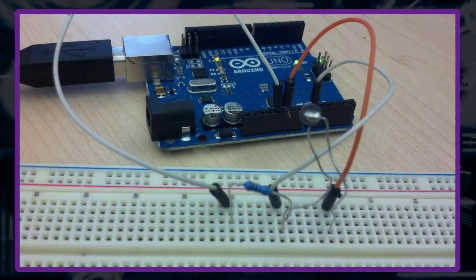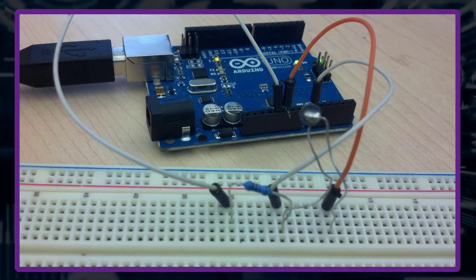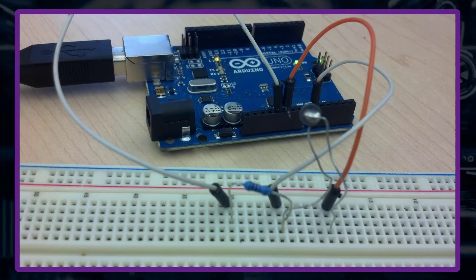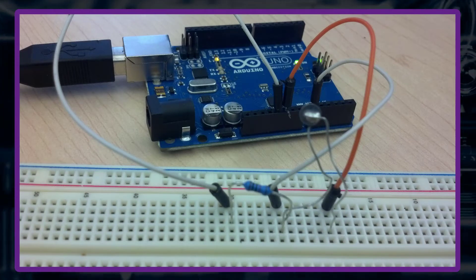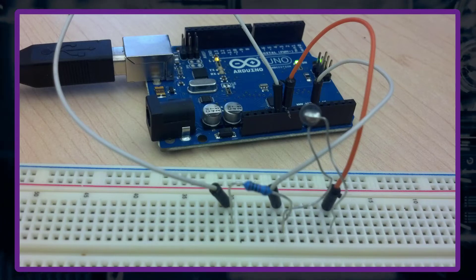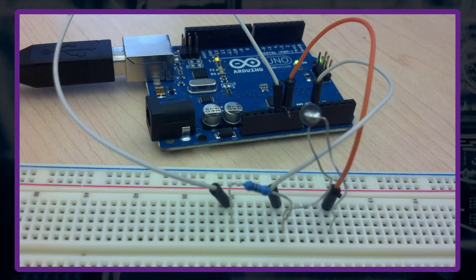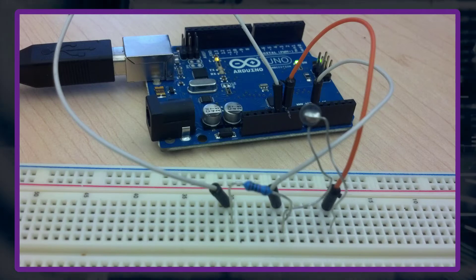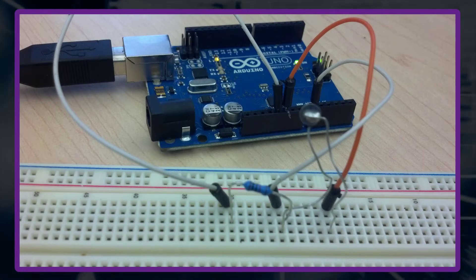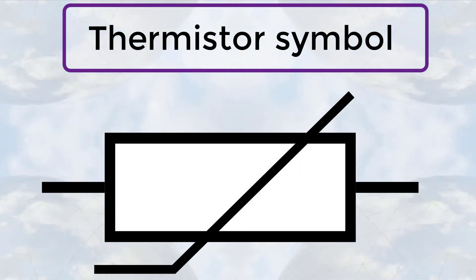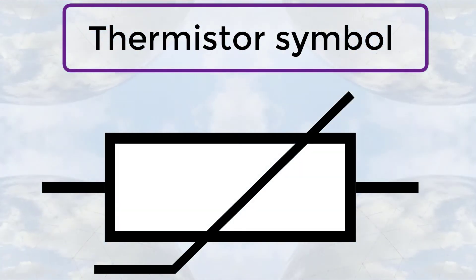A thermistor is made from a semiconductor material. It is shaped into a disc, a rod, or a bead. Bead thermistors may be only a few millimeters in diameter. Some bead thermistors have the bead enclosed in a glass capsule. The symbol of a thermistor can be represented as follows.